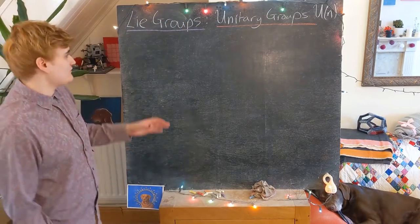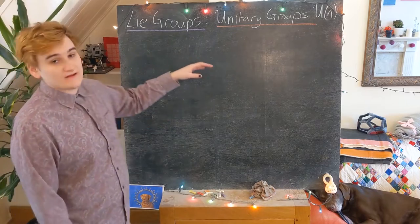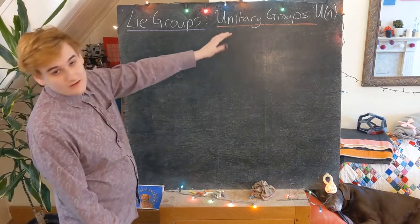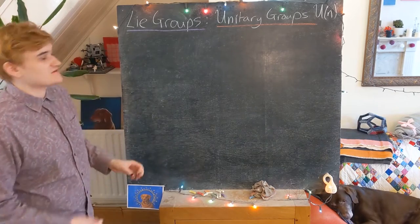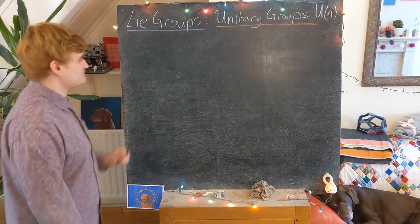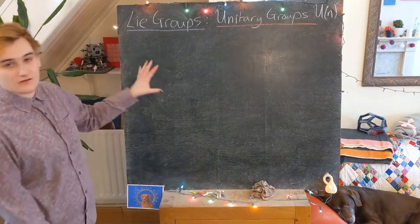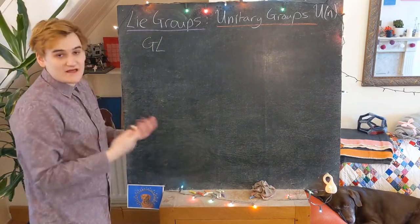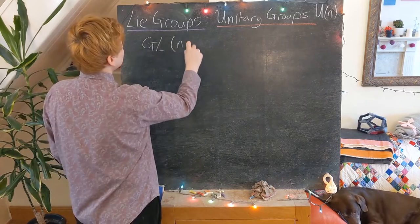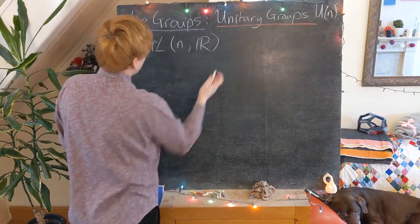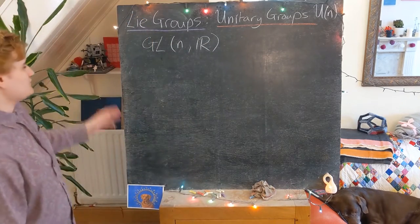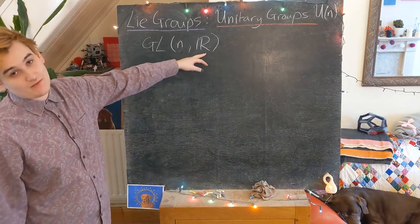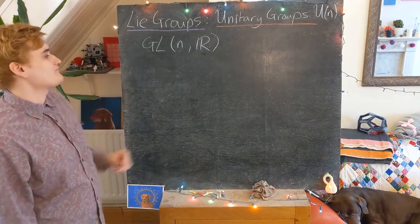Now that we're reasonably familiar with the real orthogonal groups, let's have a look at their complex counterparts, which are the unitary groups. When we were working with the orthogonal groups, we saw that these were subsets of GL(n), the general linear group of all invertible n by n matrices with real elements.